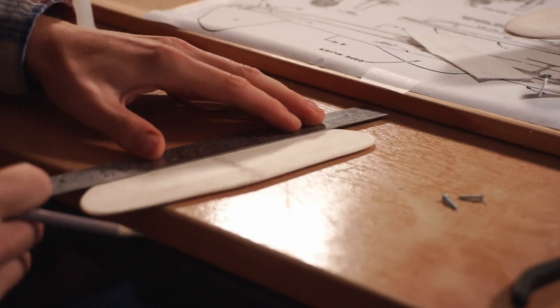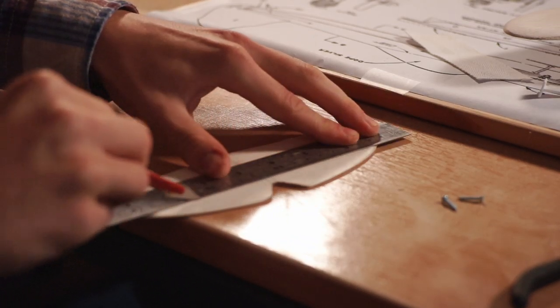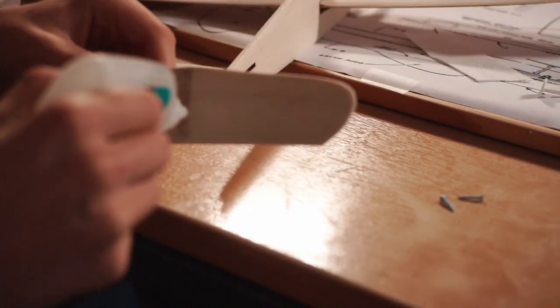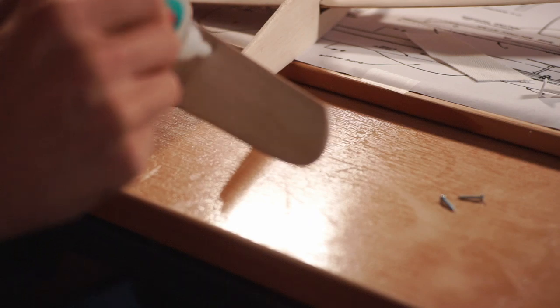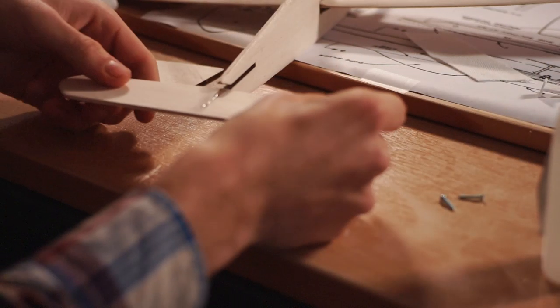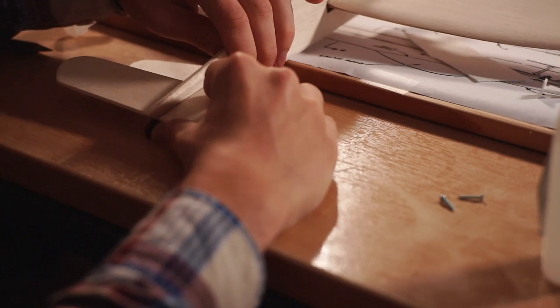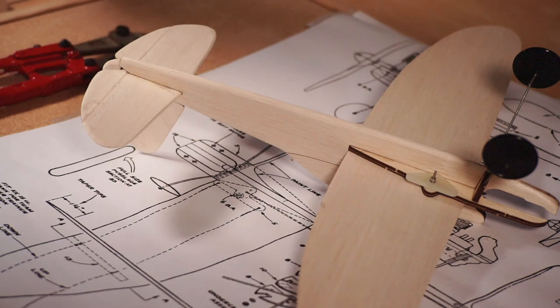Turning attention to the tail, the horizontal stabiliser needs the elevator freeing. All you need to do here is transfer the line noted on the plan to the horizontal stabiliser, and then cut the part free with a sharp blade. After sanding, the two halves can be fitted back together with a mylar hinge once the stabiliser has been glued to the fuselage.